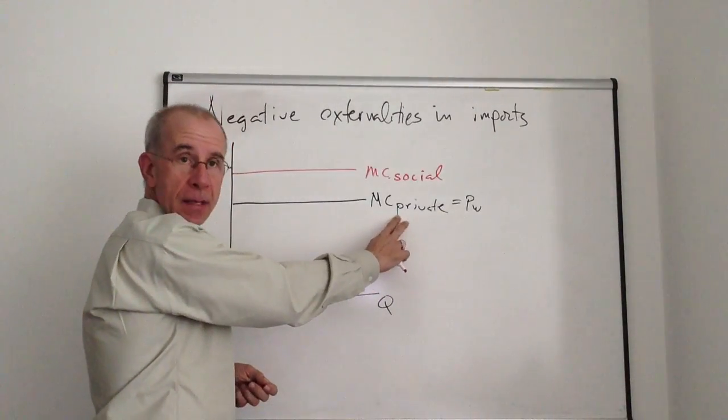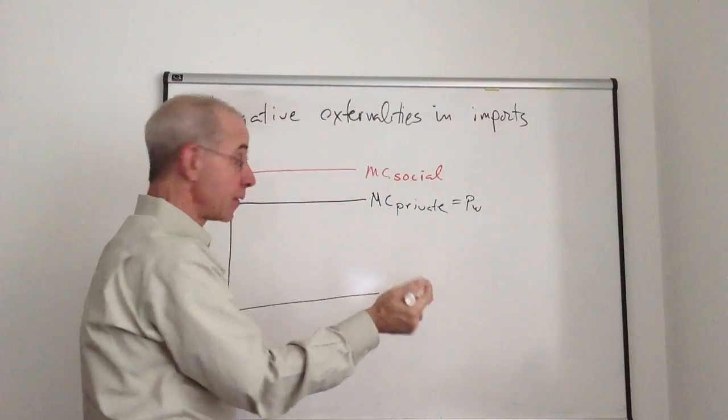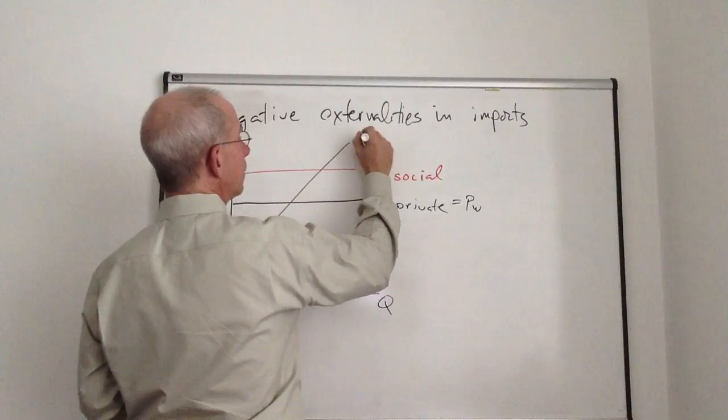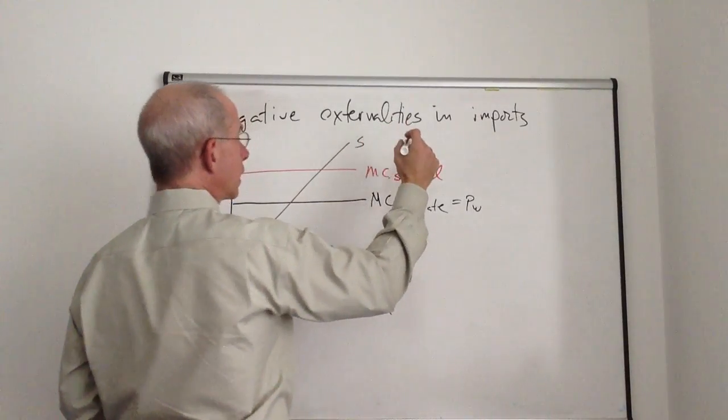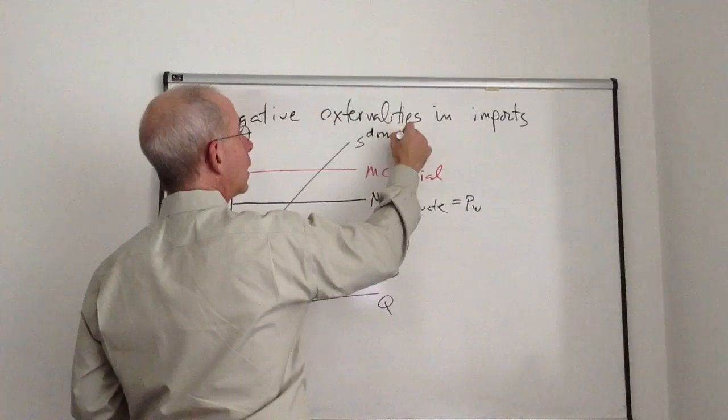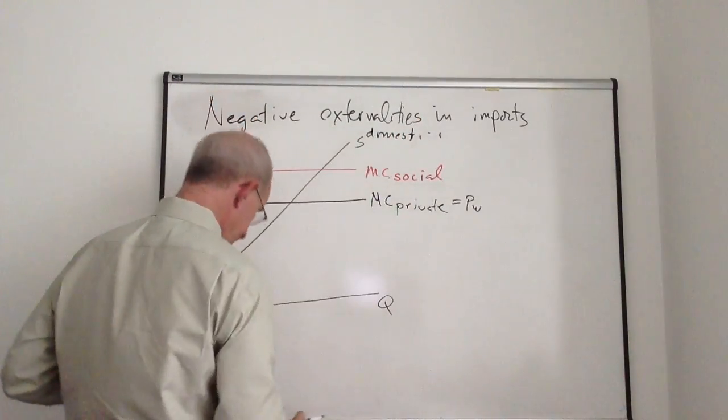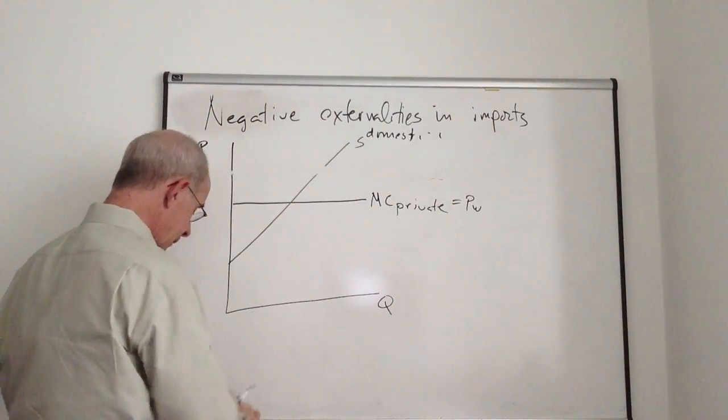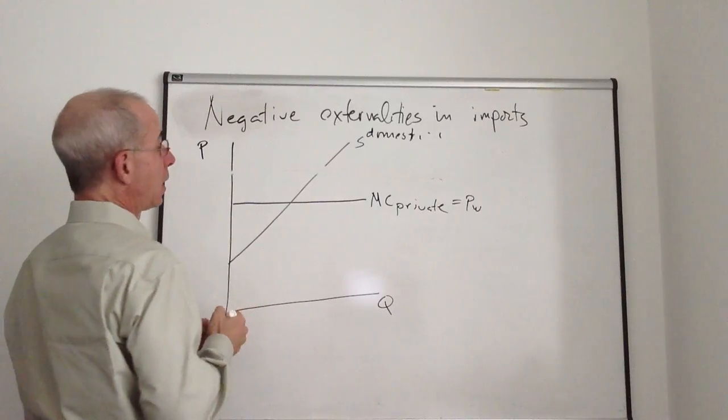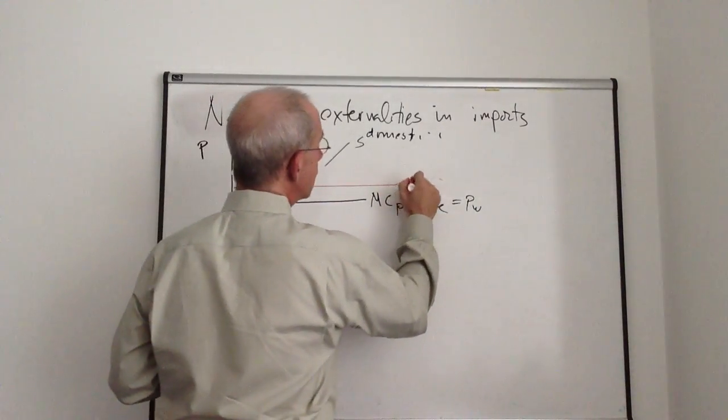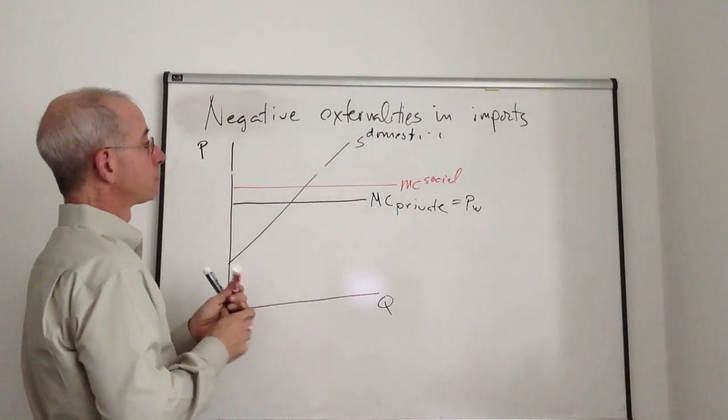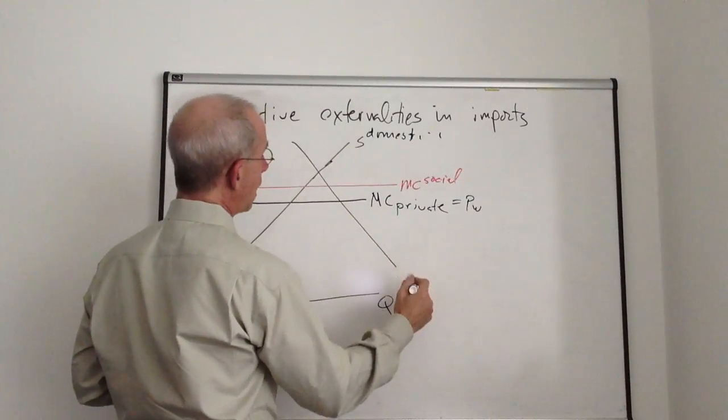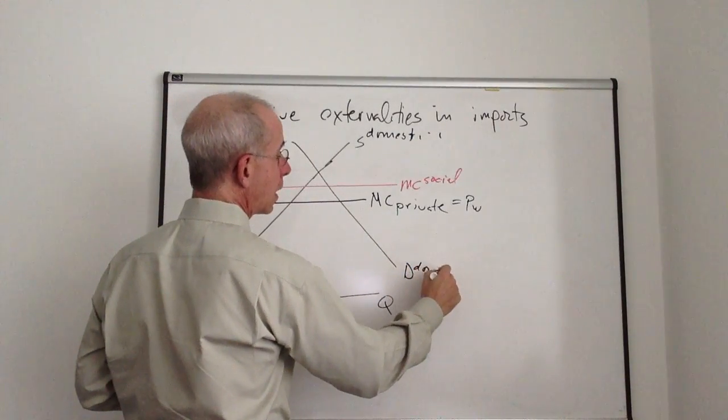But private citizens are going to make the decision based on the market price. So, let's see what the social optimum is for importing this product. So here's the marginal social cost. There's the domestic supply curve. And here is the domestic demand.